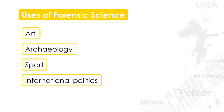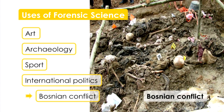Forensic science can impinge on international politics. The picture on the right was taken at the site of a mass grave in Bosnia. These poor people were killed as part of the Bosnian conflict, and the investigators are trying to determine who they were, how they died, and who killed them.